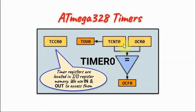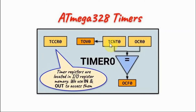Timer 0 has the timer counter register, which is an 8-bit counter that counts from 0 to 255. When the count value exceeds 255, the timer overflow flag is set, indicating the end of the count. Timer 0 also has an output compare register, an 8-bit register that stores a value compared with the count value in the counter. When the two values are equal, the output compare flag will be set.